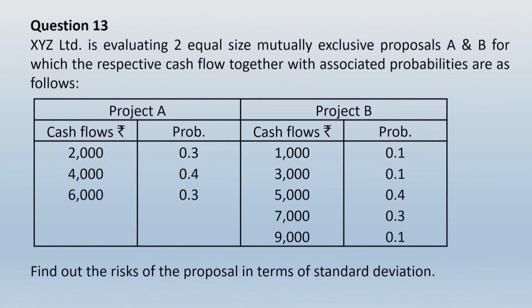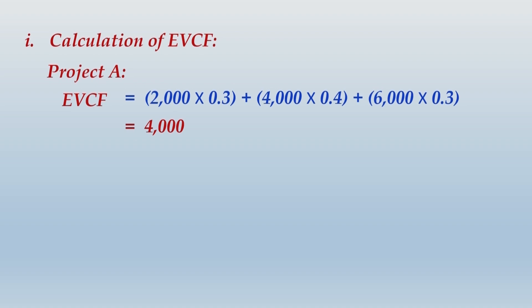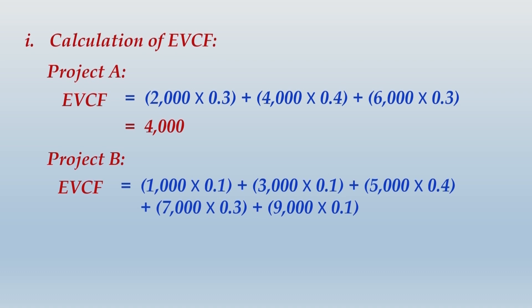Let us apply this process through question number 13. XYZ Limited is evaluating two equal size mutually exclusive proposals A and B, for which the respective cash flows together with associated probabilities are given. Find out the risk of each proposal in terms of standard deviation. The first thing to do is compute expected value of cash flow. For project A, EVCF comes to 4,000, and for project B, EVCF is 5,400.